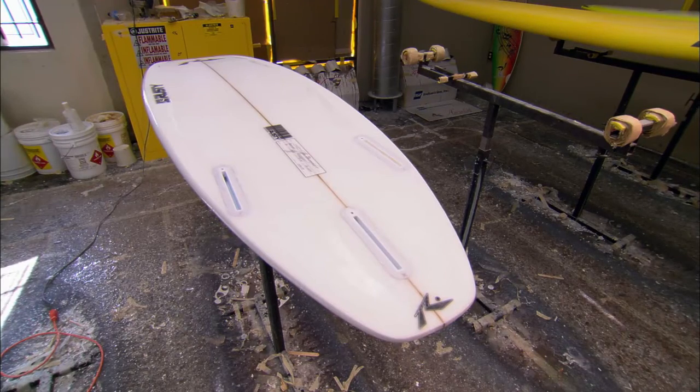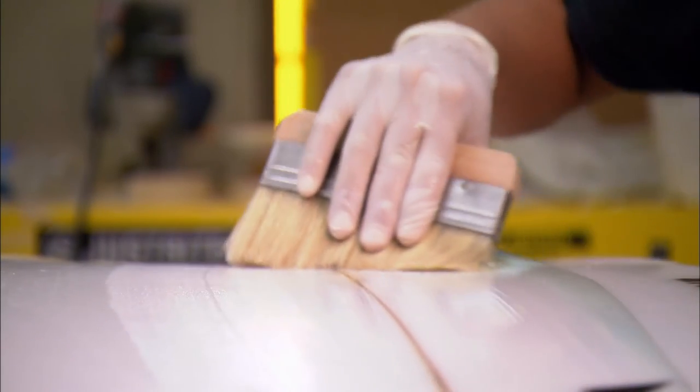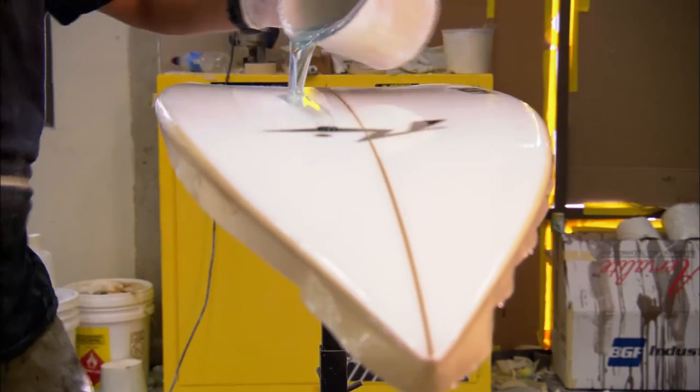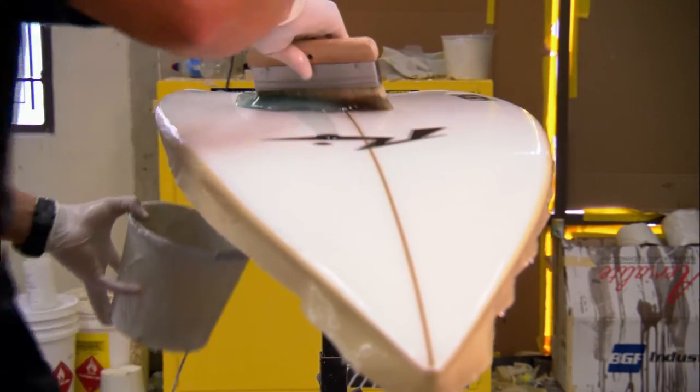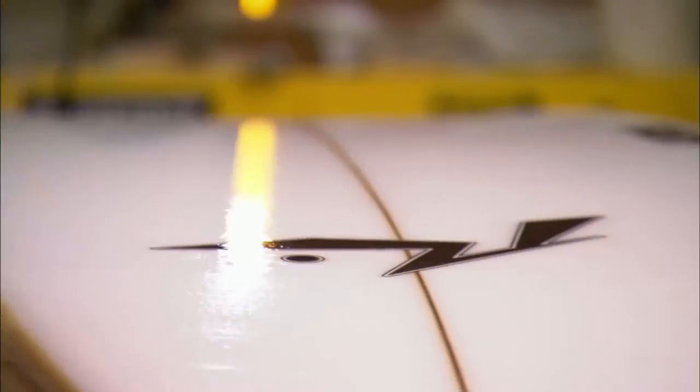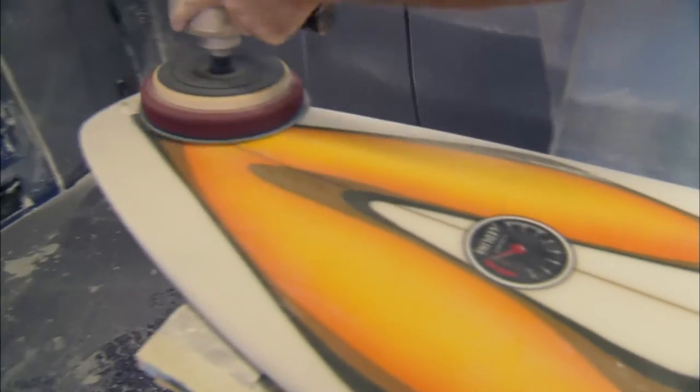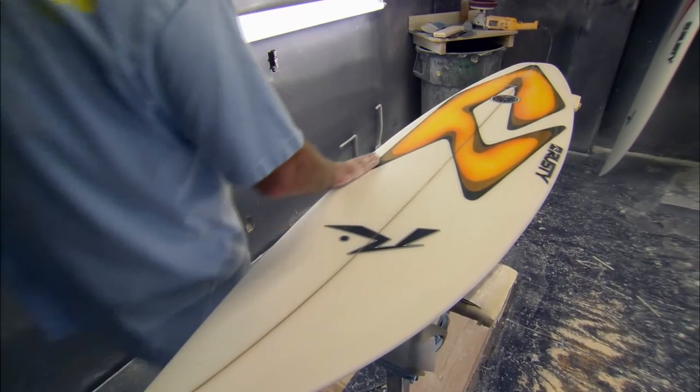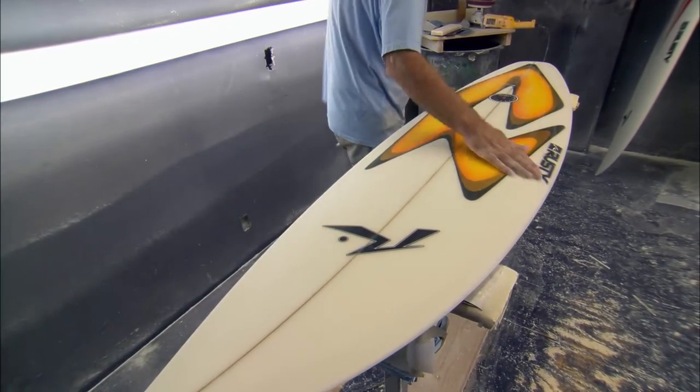But before this board hits the waves, a final hot coat of resin and wax pours over the board to smooth out the finish and give it a final waterproof seal. A fine-grain sander gives the board a final polish, and it's ready to catch the next wave.